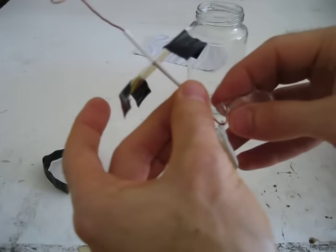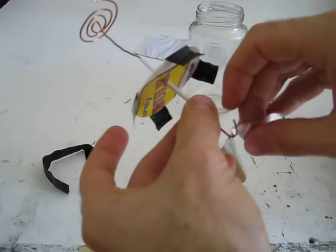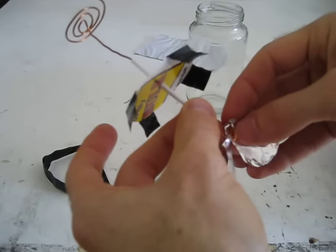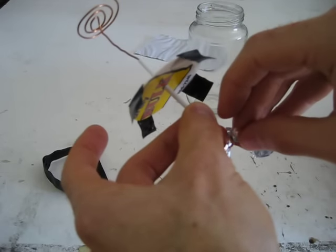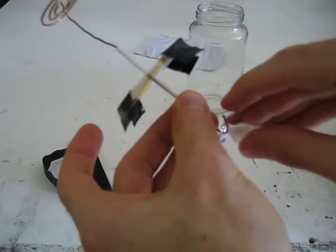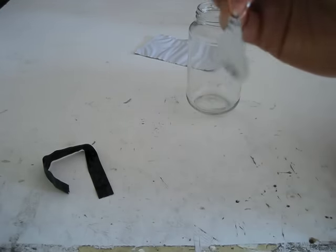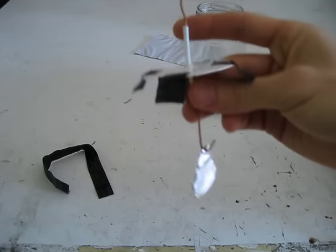Take the other piece of aluminum foil. It doesn't matter which side is shiny and which side is flat. Carefully put that through without breaking the hole. There we go. Smooth them out. And you can see that they're now touching together at the end of the hook.